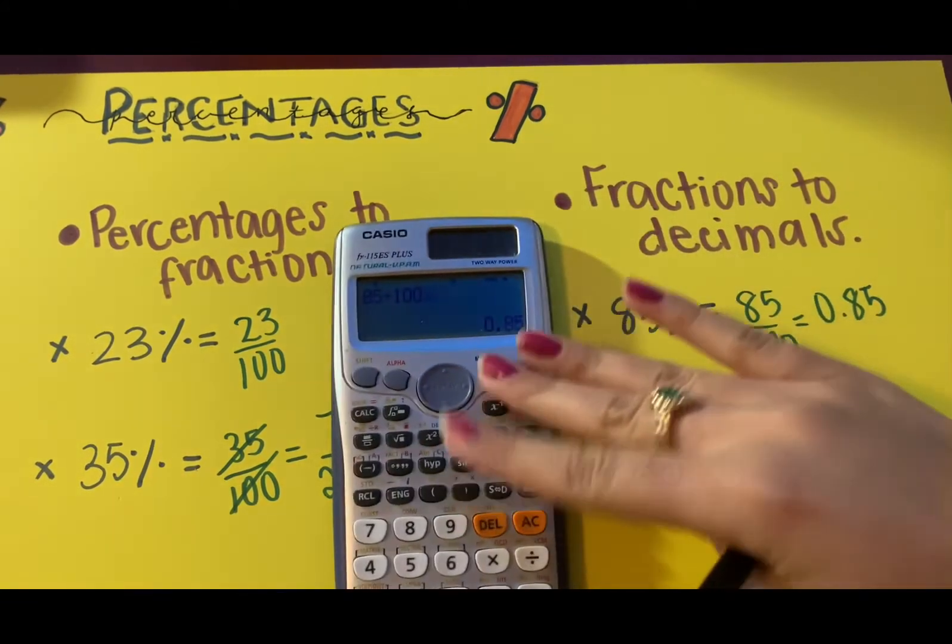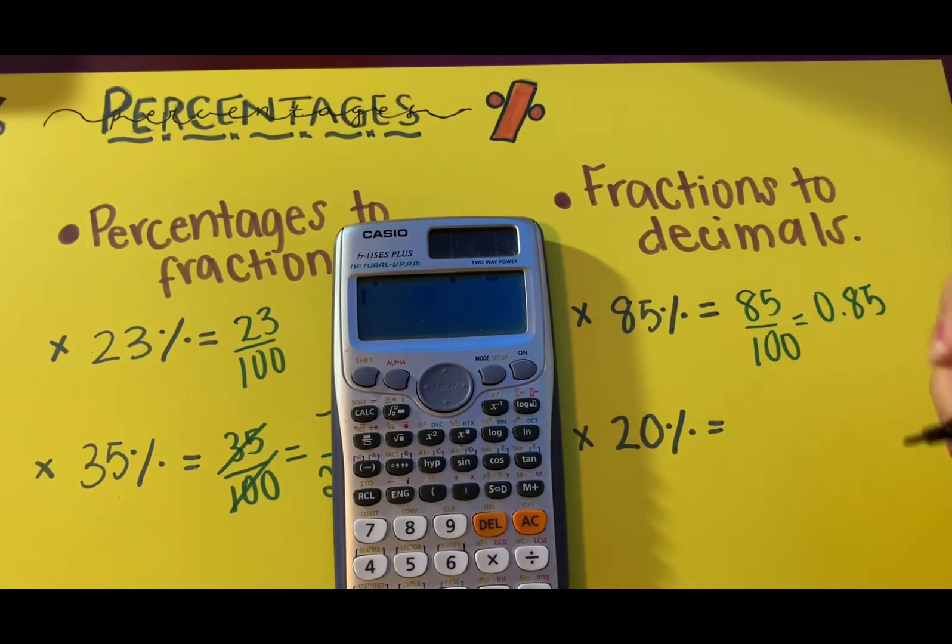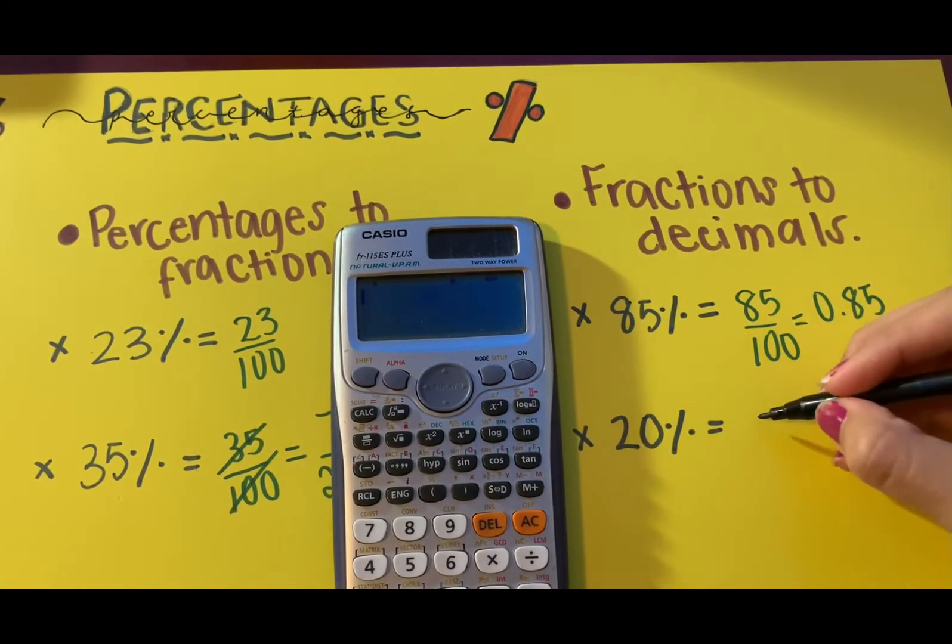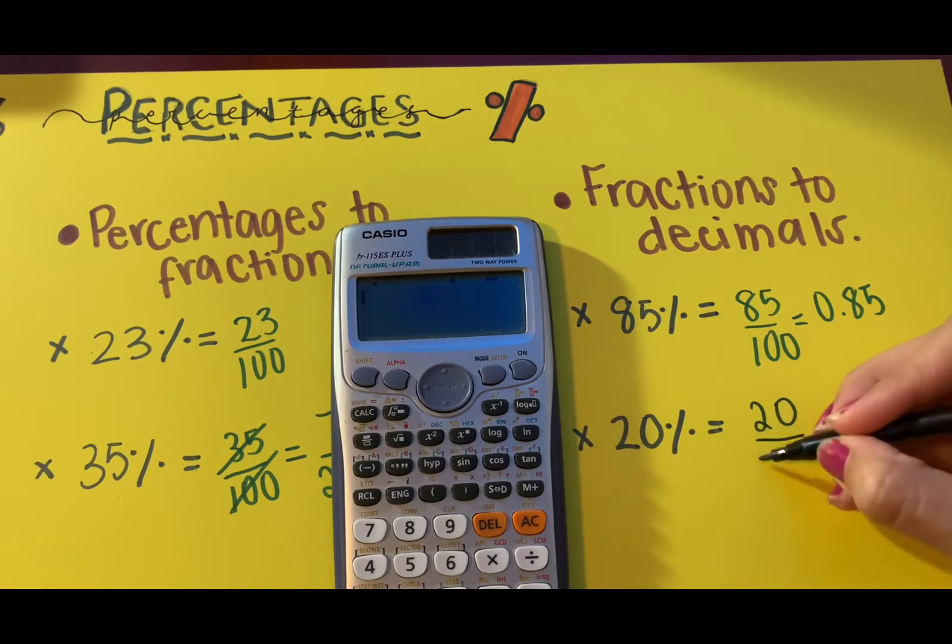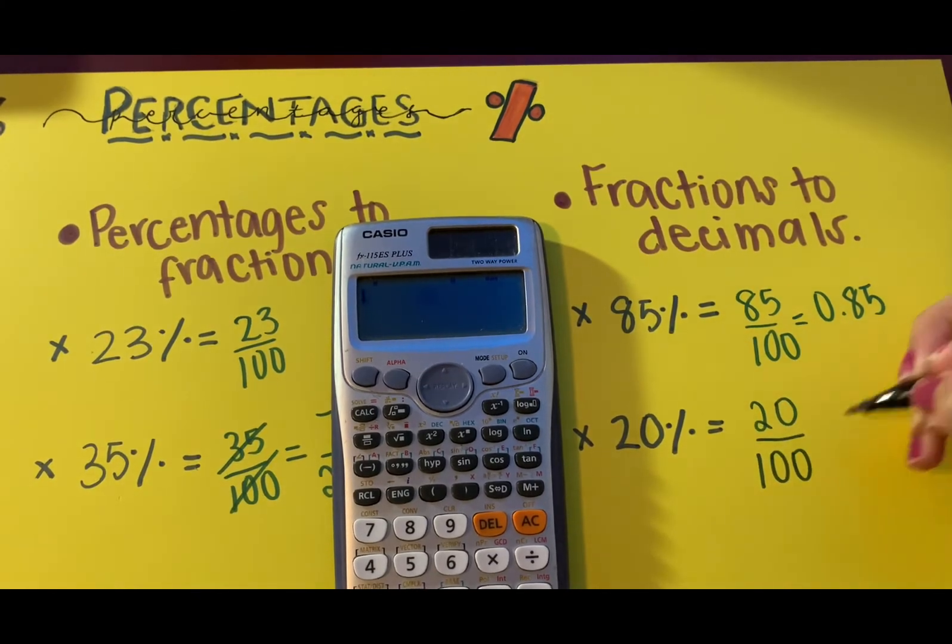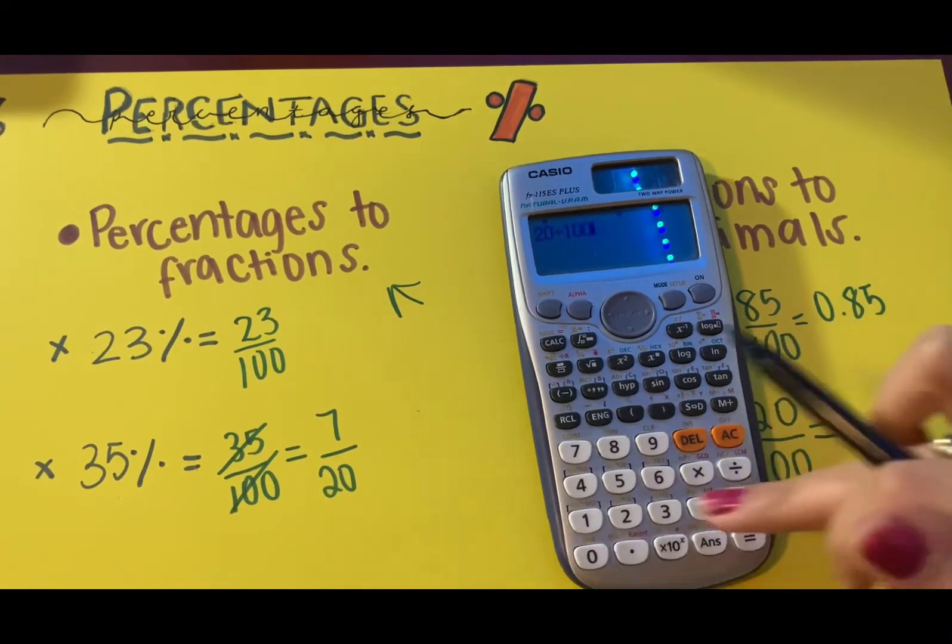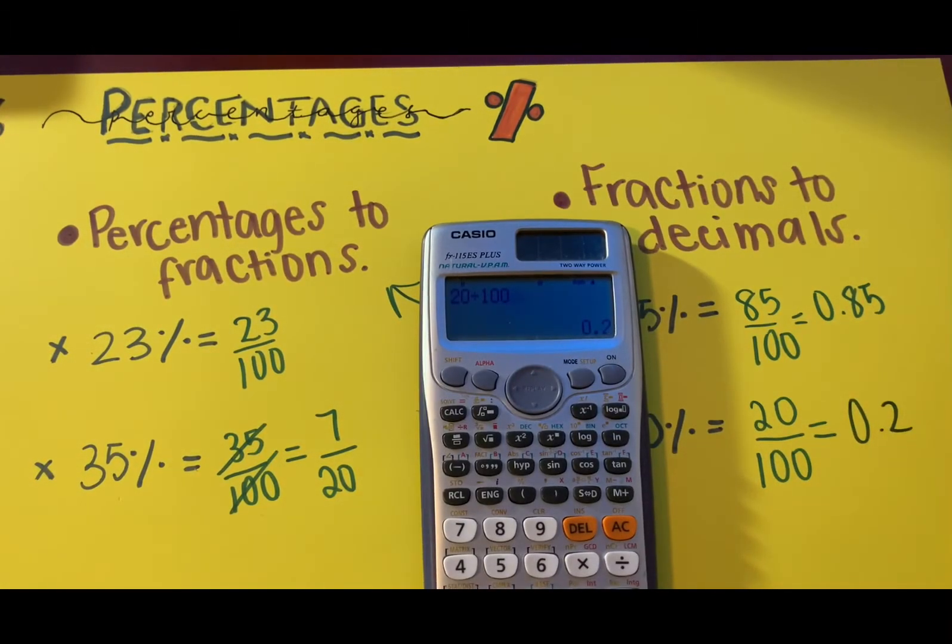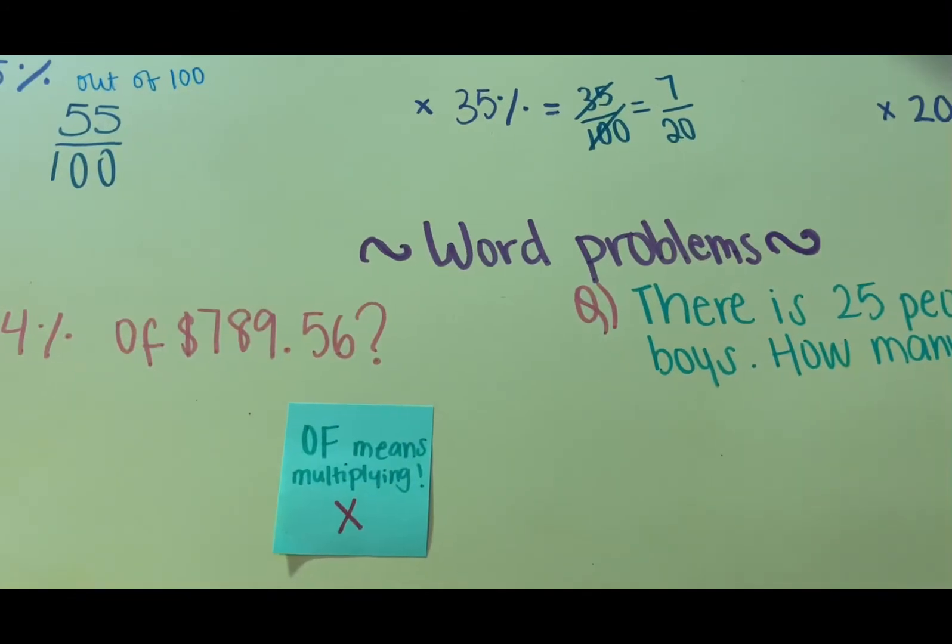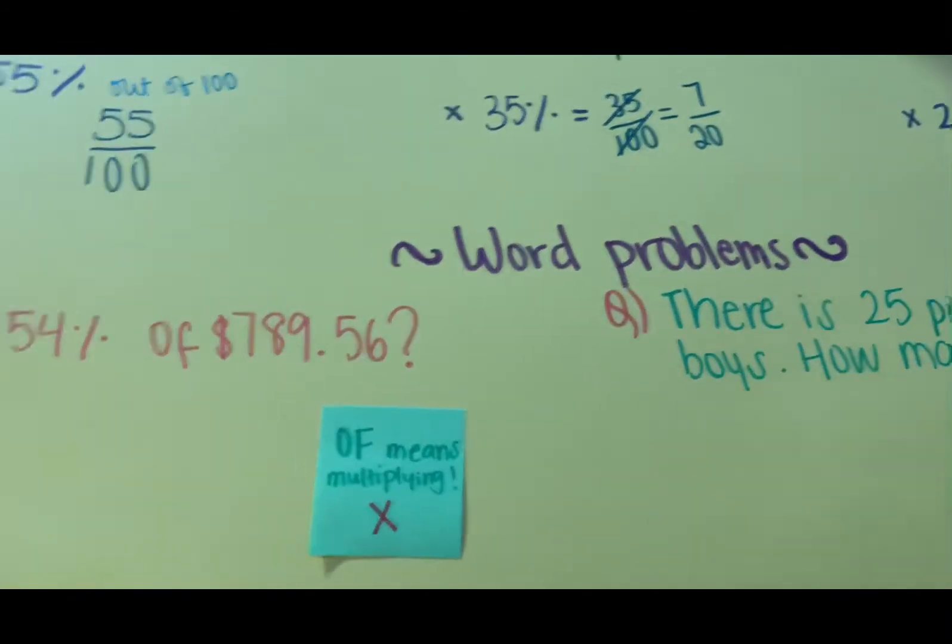Simplification is an optional step. 20 over 100, 20 divided by 100. Put it in the calculator, you simplify it. There we go, it's 0.2 in decimals. Now we'll be going through some word problems.